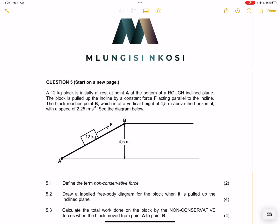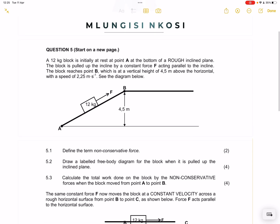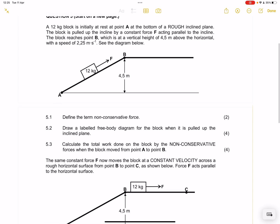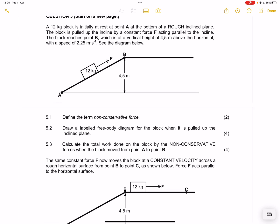Let's get right into the question. We're doing work, energy and power. This is from November 2022. The question says a 12 kg block is initially at rest at point A at the bottom of a rough incline plane. The block is pulled up the incline by constant force F acting parallel to the incline. The block reaches point B, which is at a vertical height of 4.5 meters above the horizontal with a speed of 2.25 meters per second.